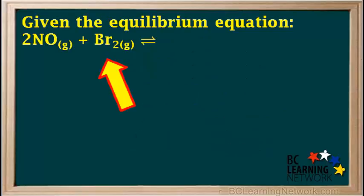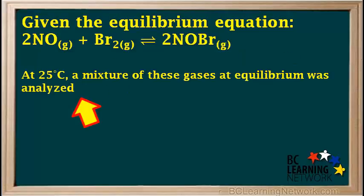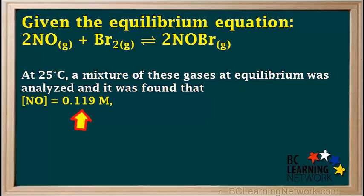Given the equilibrium equation: 2NO gas plus Br2 gas gives 2NOBr gas. At 25 degrees, a mixture of these gases at equilibrium was analyzed, and it was found that the concentration of NO is 0.119 molar, the concentration of Br2 is 0.0595 molar,